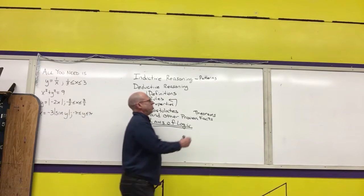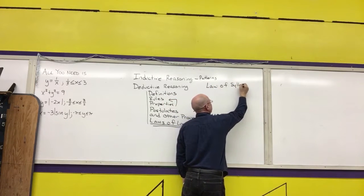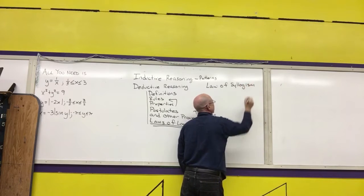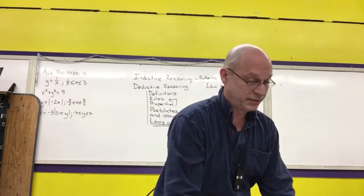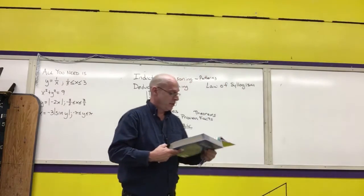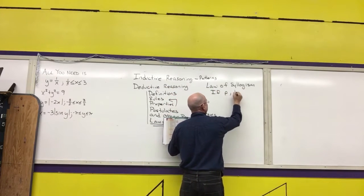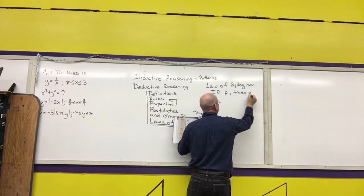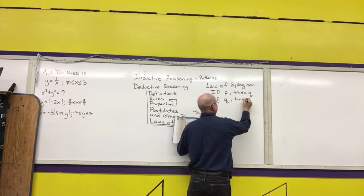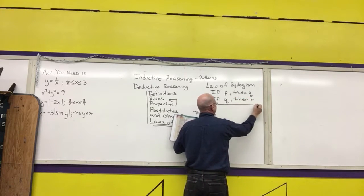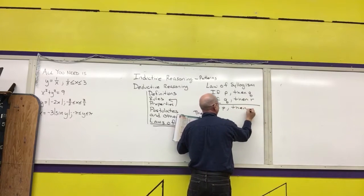The first one is called the law of syllogism. And to me, the law of syllogism is basically common sense. In your book, it says if P, then Q. I'll have a second statement that says if Q, then R, implies that if P, then R.